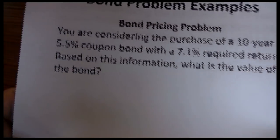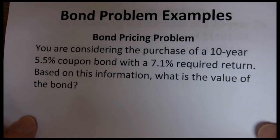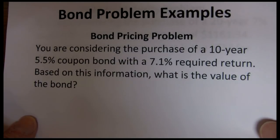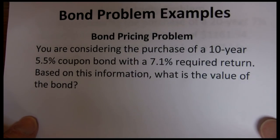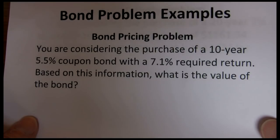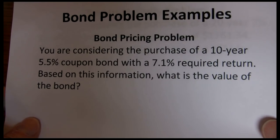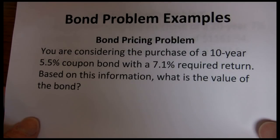Let's start with the first case, the bond pricing problem for an ordinary bond. In this problem you are considering the purchase of a 10-year 5.5% coupon bond with a 7.1% required return. We want to know what the value of this bond is right now.